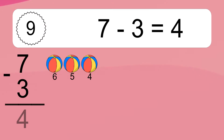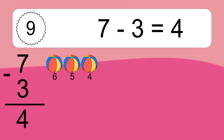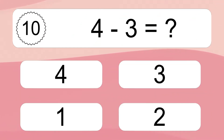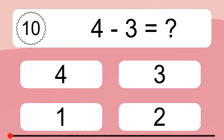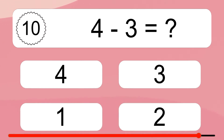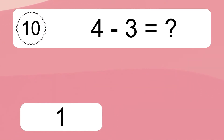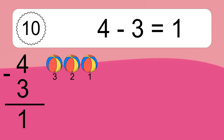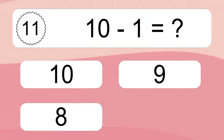7 minus 3 equals what? 7 minus 3 equals 4. Let's count it: 6, 5, 4. 4 minus 3 equals what? 4 minus 3 equals 1. Let's count it: 3, 2, 1.